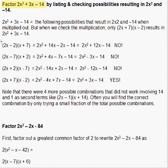So we list all these possibilities and our first possibility is (2x - 2)(x + 7). That gives us the 2x² and also gives us the -14, but the middle products are 14x and -2x, and those add up to 12x, which doesn't work because we want 3x.